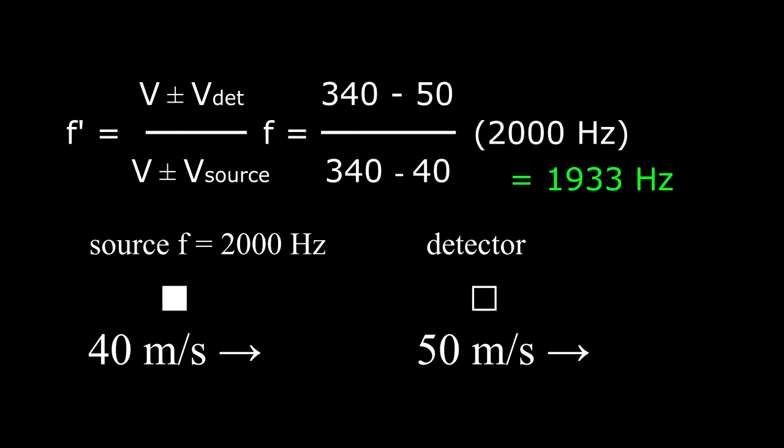Now that you've had some practice operating the Doppler shift equation, its derivation will make more sense. This equation works only for sound waves and only when the source and detector are moving along the same line. The equation will be different if one object moves at an angle to the other, and the equation is different again in the case of the Doppler effect for light waves.